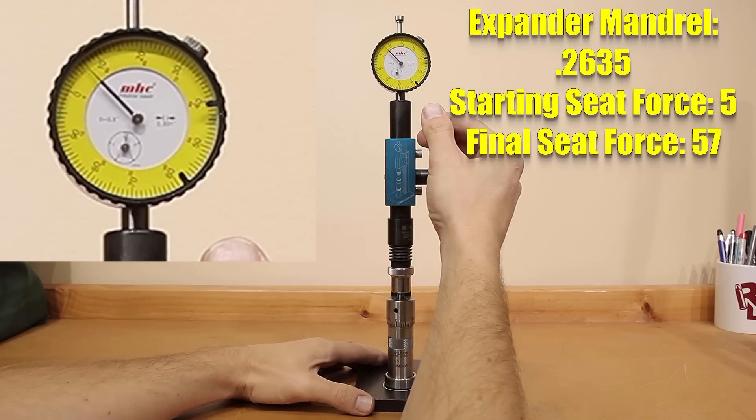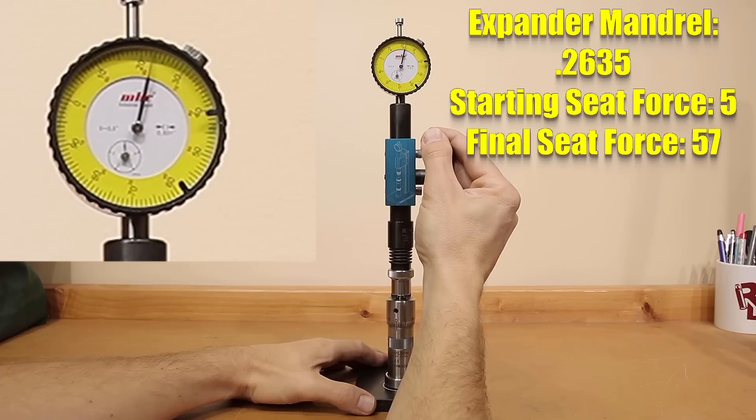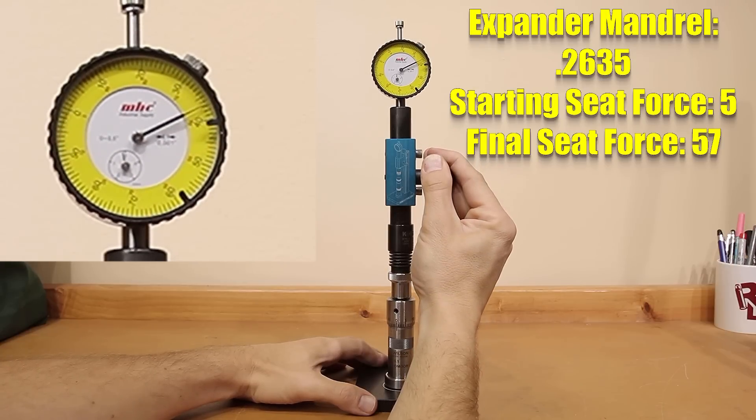Moving on to the 0.263 and a half, our starting force dropped to 5 pounds, our final force being around 57 pounds.